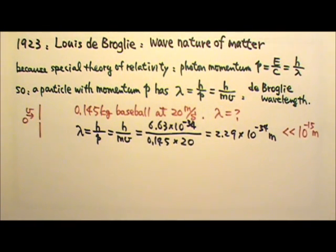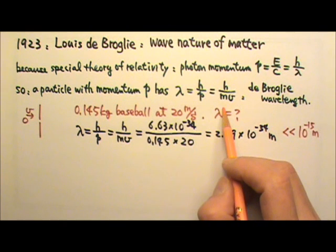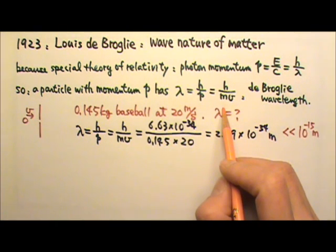However, if we look at an electron, an object with a much, much smaller mass than a baseball, the wavelength may get long enough for us to observe its wave behavior. We will continue this part in our next lesson.